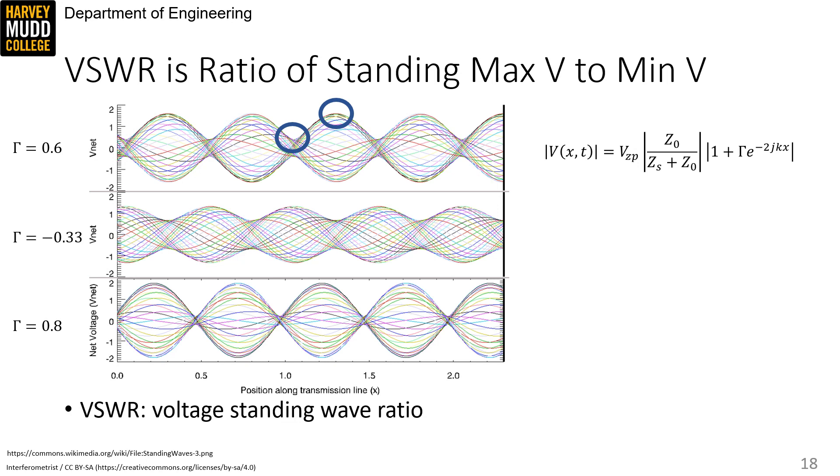VSWR, or the voltage standing wave ratio, is the ratio of the peak height to the trough height. So, this point divided by this point.